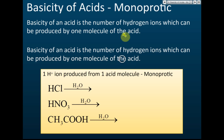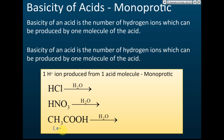A monoprotic acid is an acid that produces one hydrogen ion from one acid molecule. Examples include hydrochloric acid, nitric acid, and ethanoic acid. Hydrochloric acid when dissolved in water forms hydrogen ions and chloride ions — just one hydrogen ion, so it's monoprotic. Nitric acid is also the same; it forms one hydrogen ion and one nitrate ion, so it's also monoprotic.